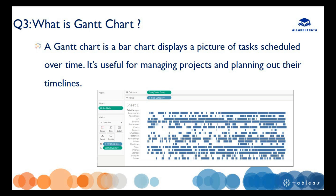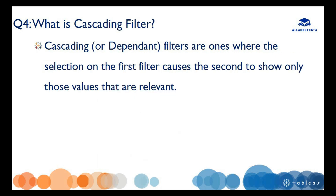The next question is: what is a Gantt chart? A Gantt chart is a bar chart that displays a picture of tasks scheduled over time. It is useful for managing projects and planning out their timelines. You can create a Gantt chart by using a date field and a dimension, and you can drag measures into the size shelf to adjust the size of the Gantt bars.